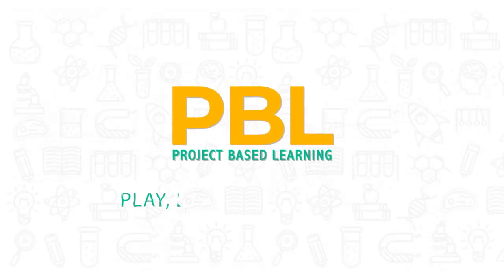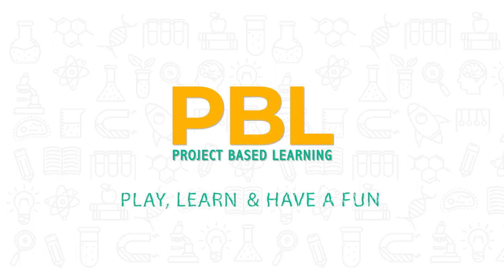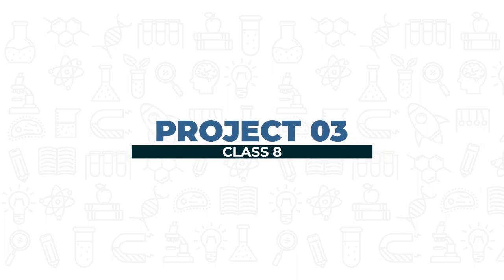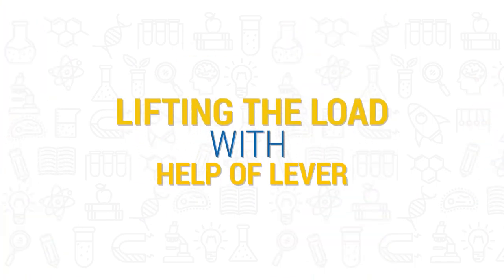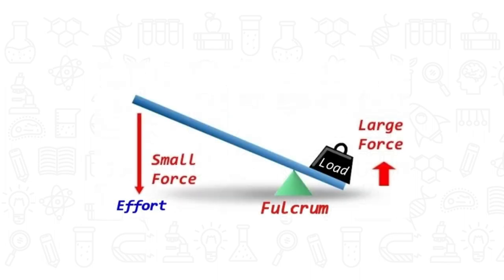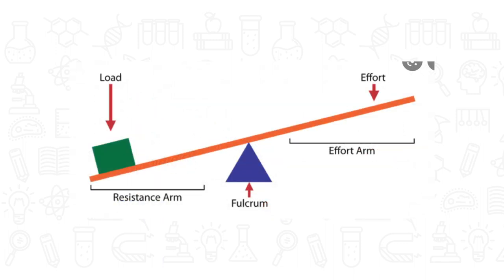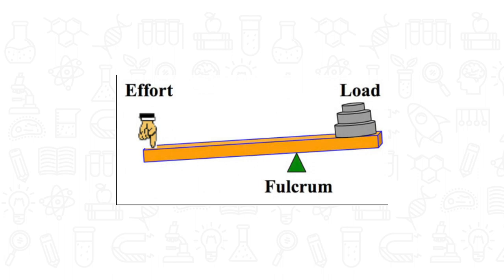PBL project-based learning: play, learn and have fun. Lifting the load with the help of a lever. A lever is a type of simple machine that can lift objects with little effort. It has an arm that rests on or is attached to a point known as a fulcrum. When pressure is put on one end of the lever, the other end moves an object that would normally be very hard to move.